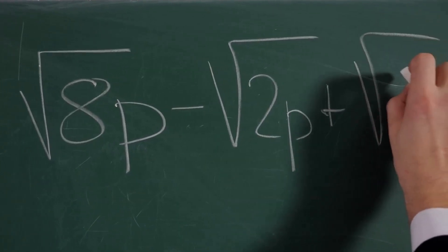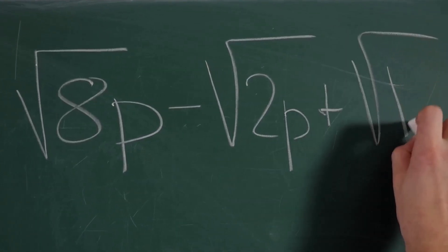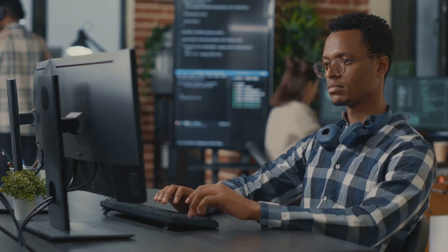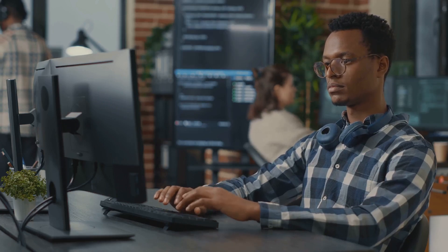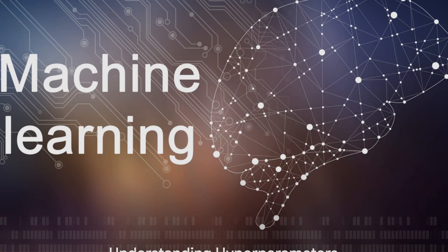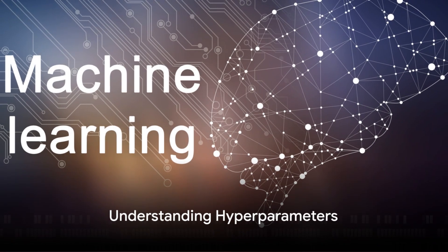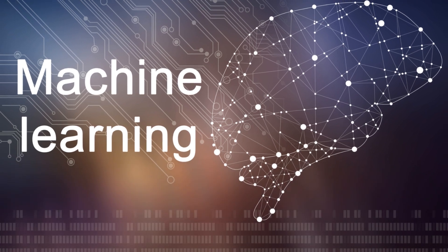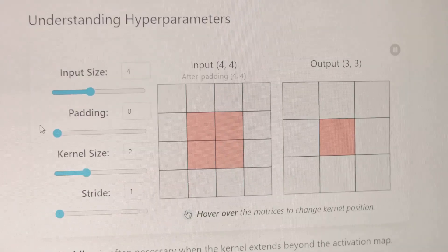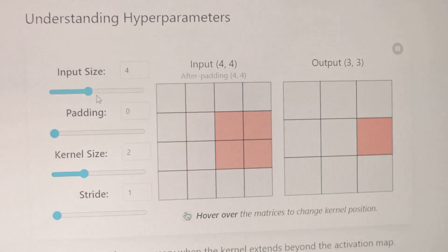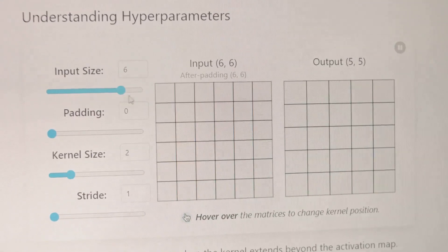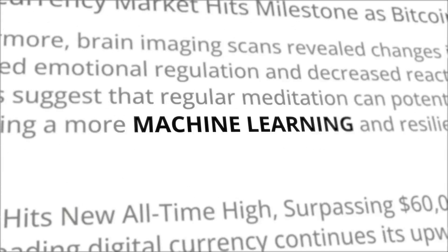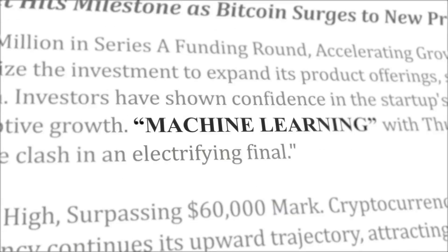In the realm of machine learning, these settings are known as hyperparameters, and their optimization is what we call hyperparameter tuning. Imagine a machine learning model as a complex machine with numerous dials and switches. These dials and switches represent the hyperparameters of the model. They control everything from how fast the model learns,